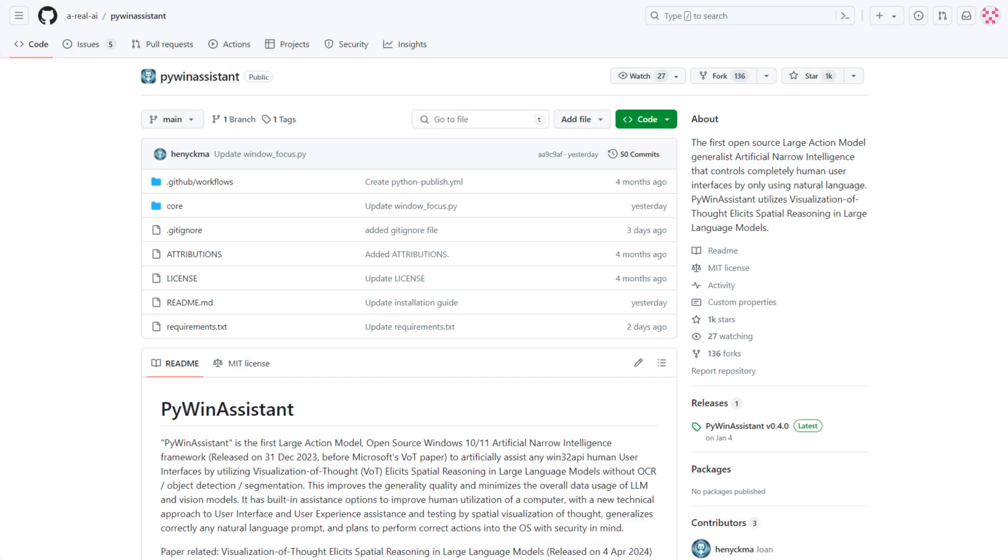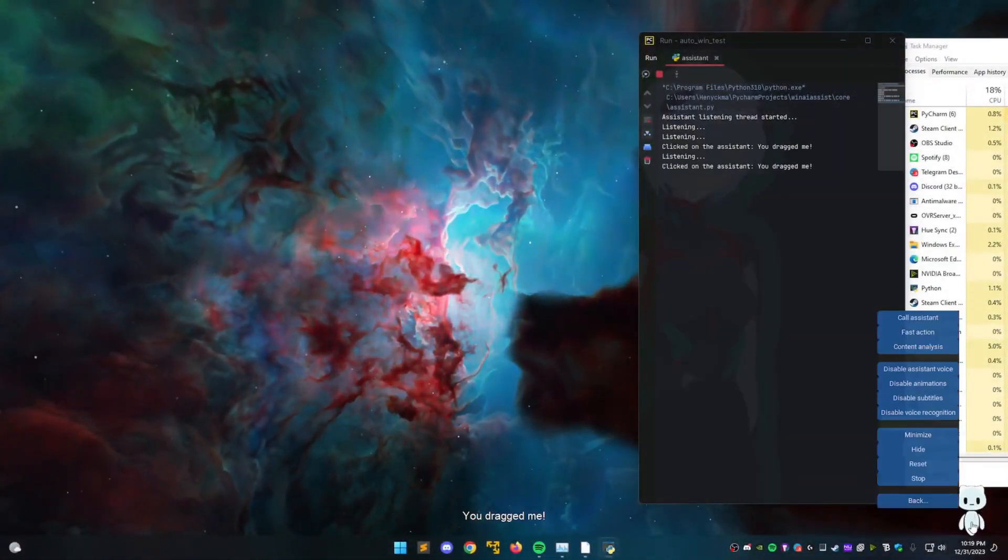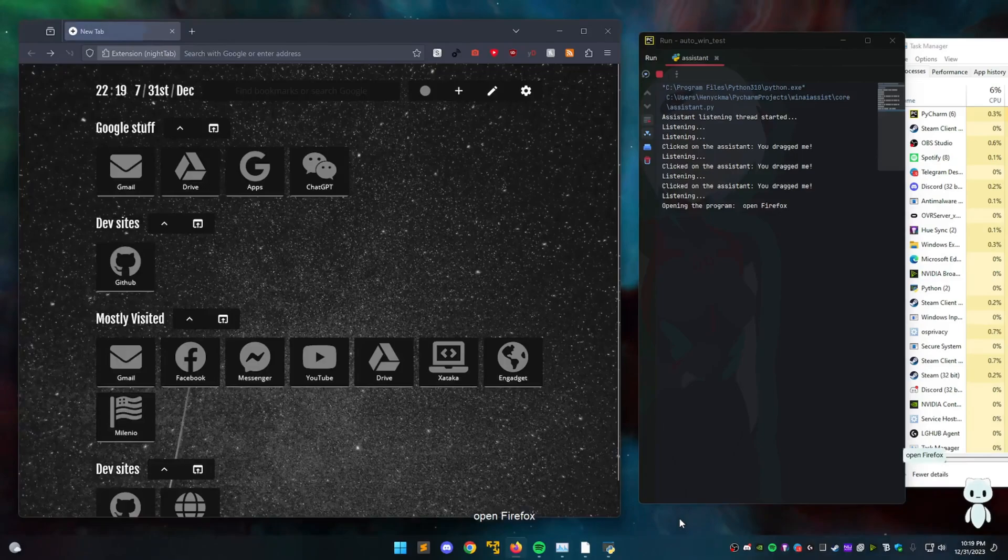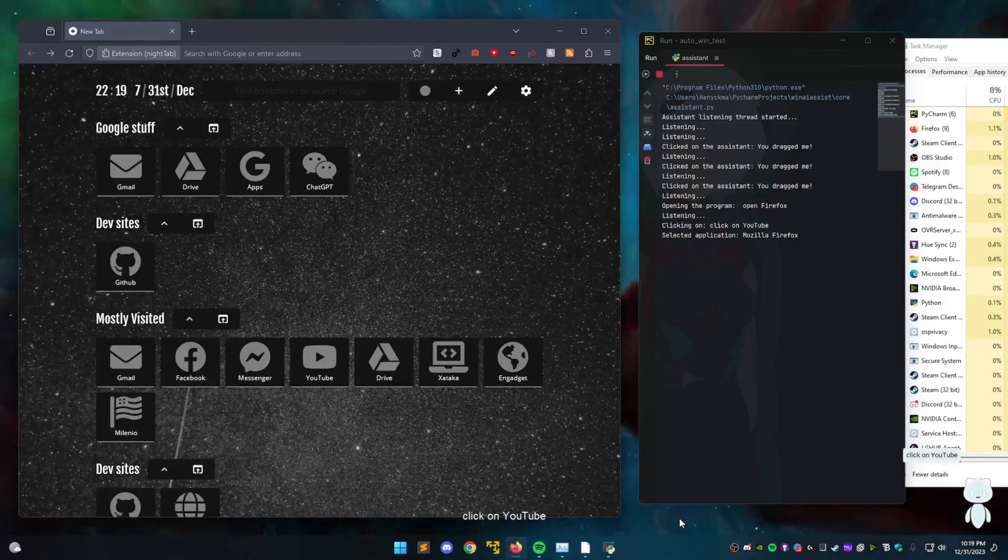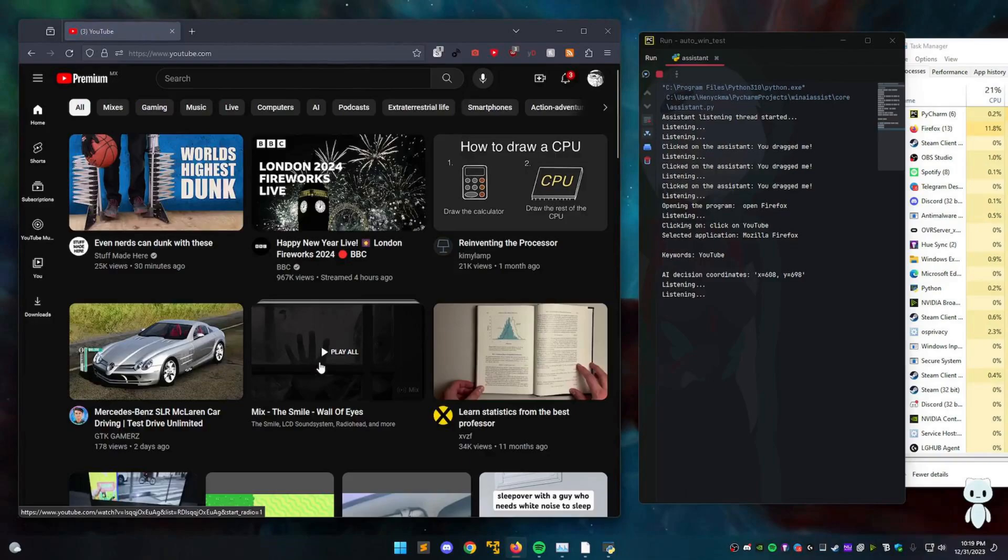What we're going to witness is a demonstration in the Windows environment. We have this small assistant right here, and you can instruct it to perform various tasks. So let's take a look. Open Firefox. Click on YouTube. Clicking onto the element without visioning context. So it successfully clicked on YouTube.